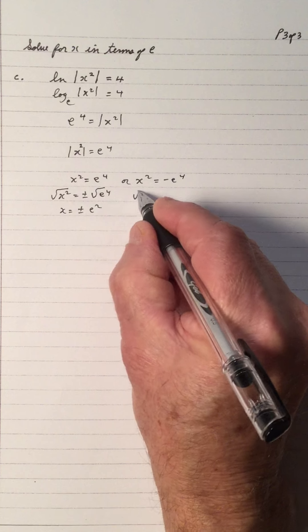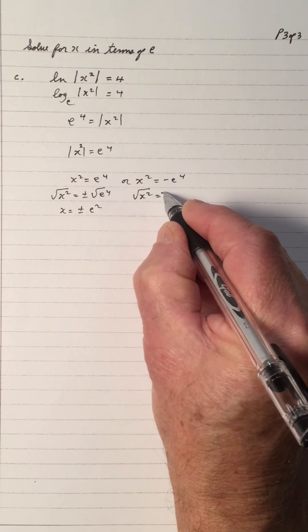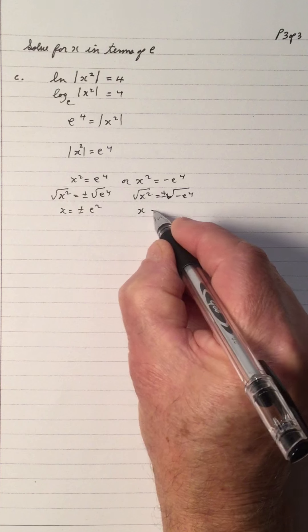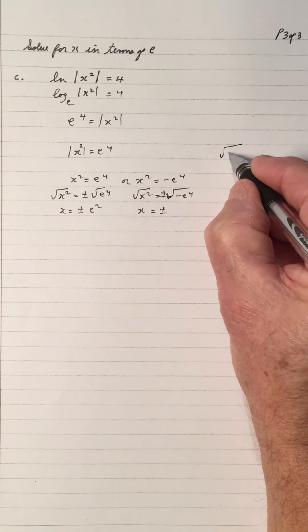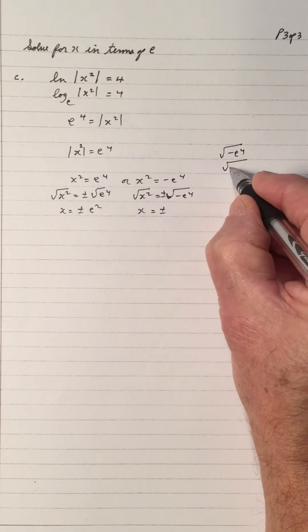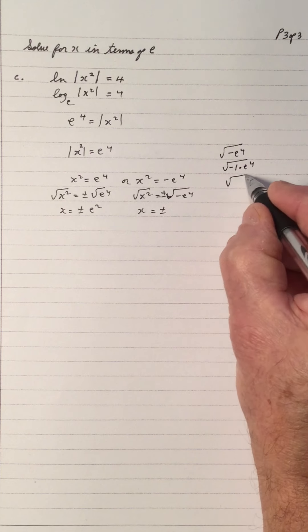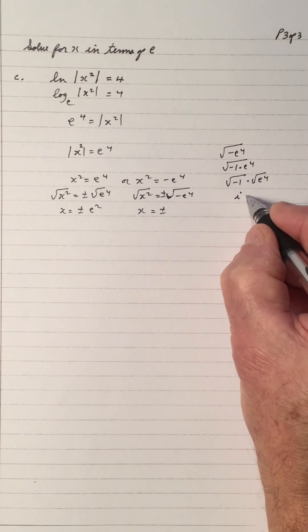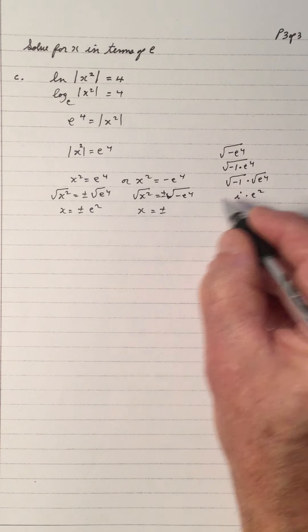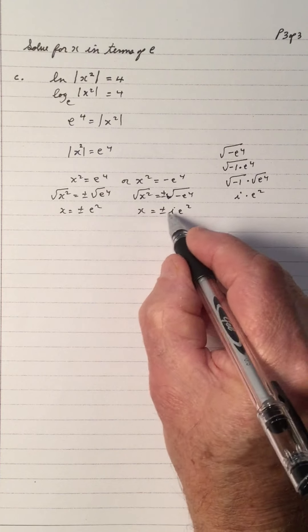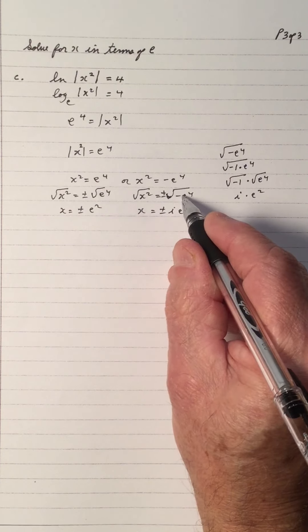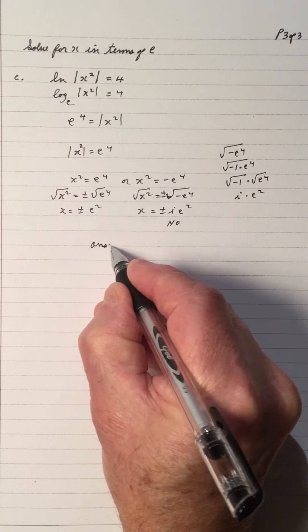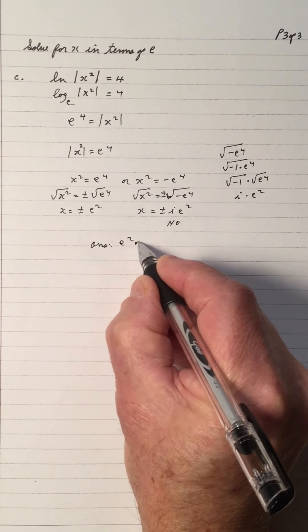For the other case, square root of x² equals plus or minus square root of negative e to the fourth. That's the same as square root of negative one times e to the fourth, which equals square root of negative one times square root of e to the fourth. Square root of negative one is the imaginary number i, so this gives plus or minus i·e². This is an imaginary number, and in logarithms we cannot deal with square roots of negatives — so this is a no. The answer is e² or negative e².